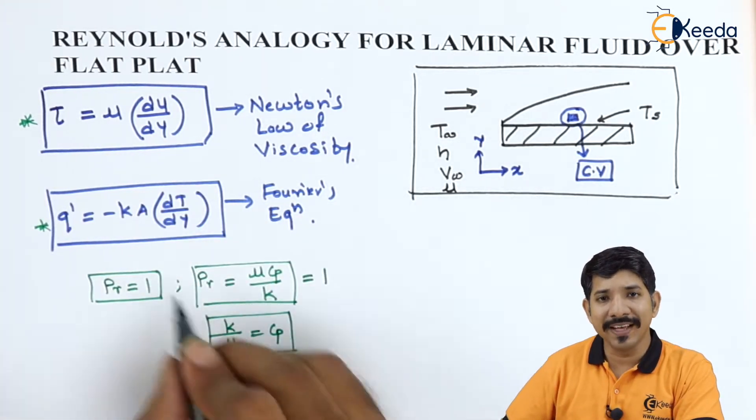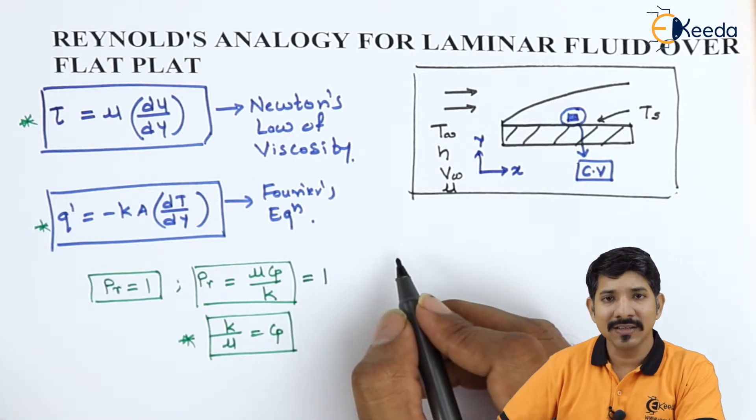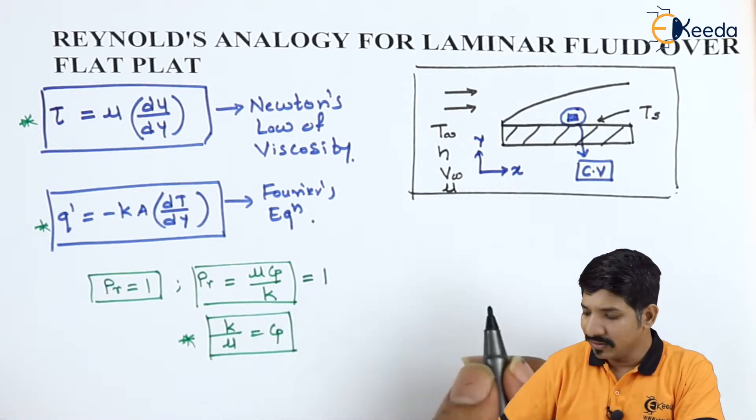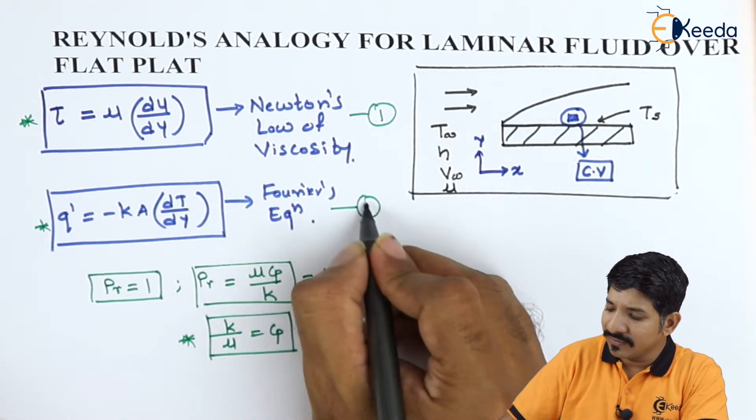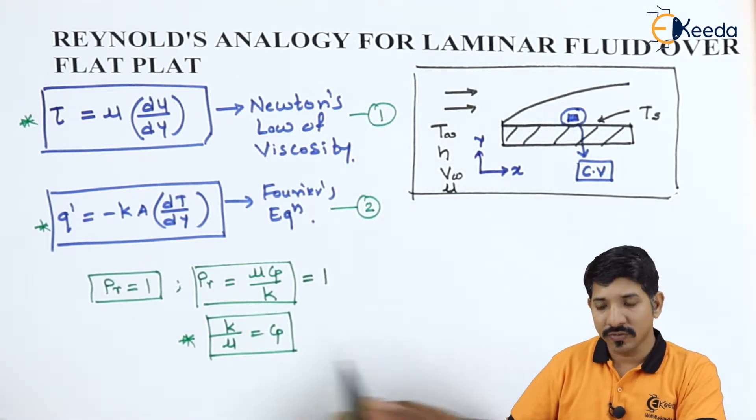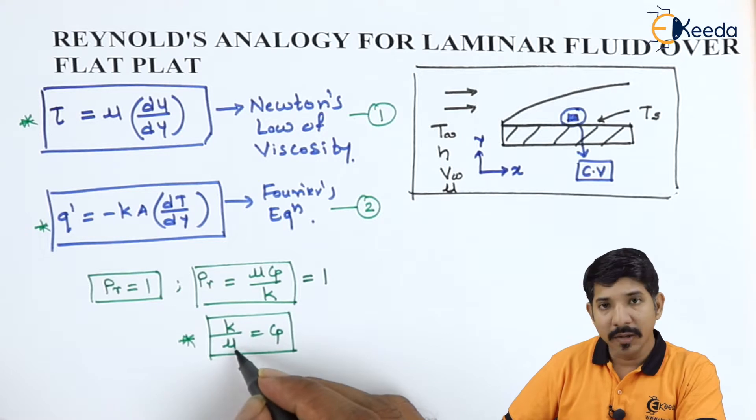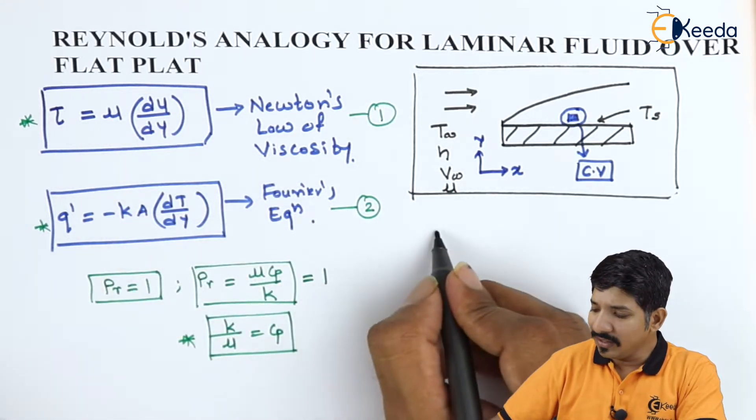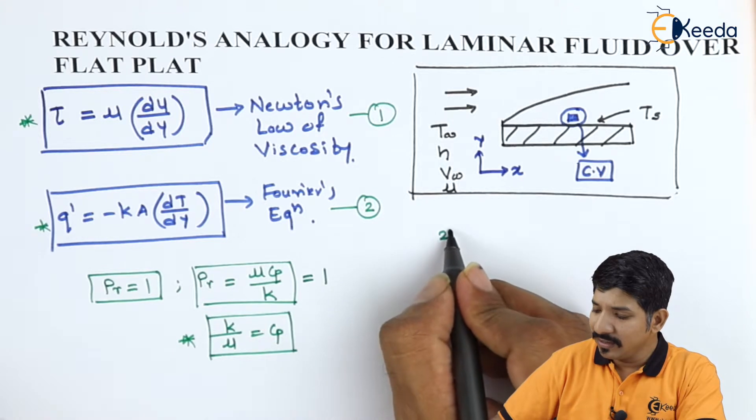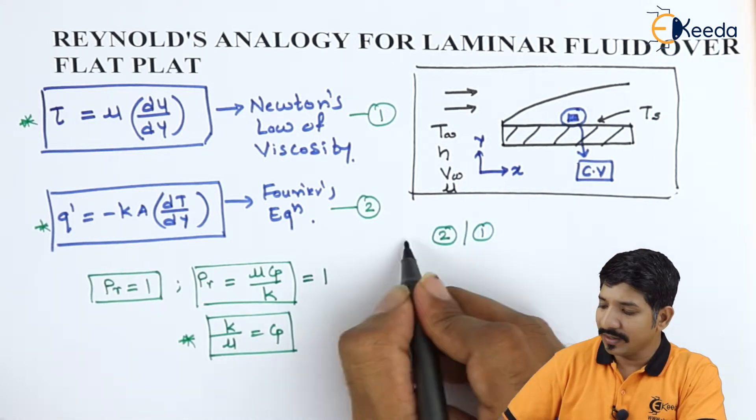So we are going to use these three equations and then we are going to play with these three equations to come up with certain final equation. Now, let us write this equation number 1, this as equation 2. We have here k by mu. So this k and mu need to be divided. So let us do one thing, let us divide 2 by 1.